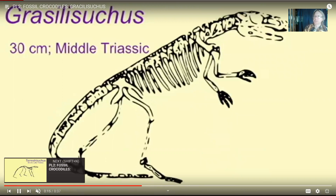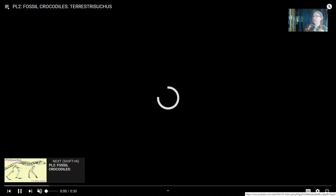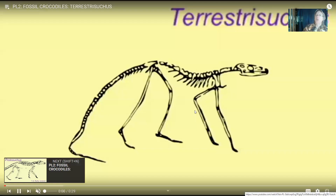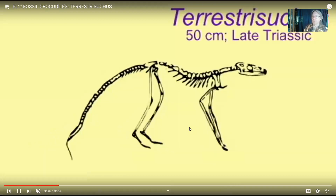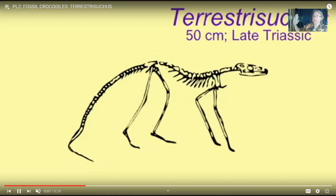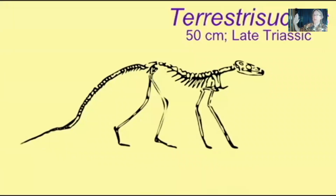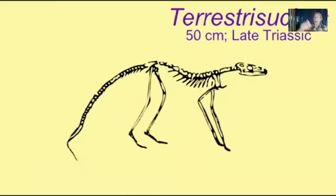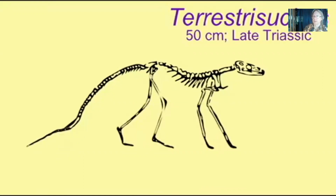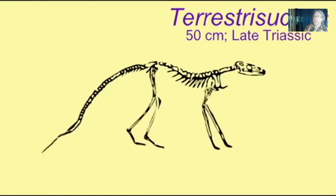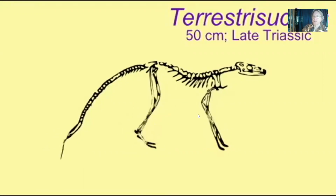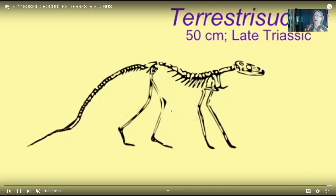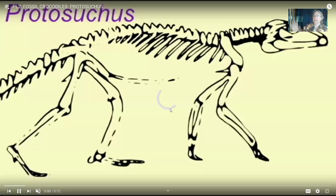Terrestrisuchus, with its very thin limbs, is obviously unlike any crocodilian today. In addition to being capable of bipedal locomotion in some cases, they held their bodies off the ground — what we call an erect posture. A lizard sprawls, its belly can drag on the ground, whereas a dog or horse holds its belly off the ground. It takes more energy, but allows greater speeds. These early crocodiles had an erect posture rather than a lizard-like sprawl.